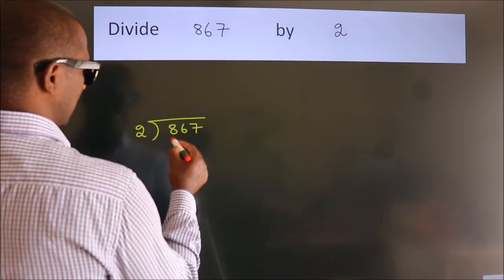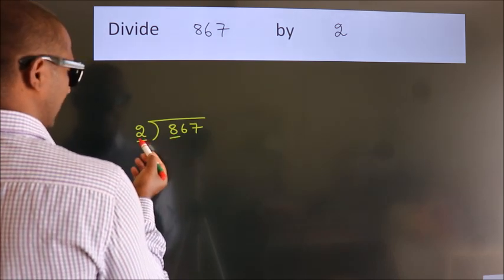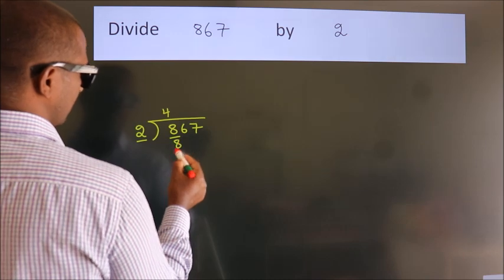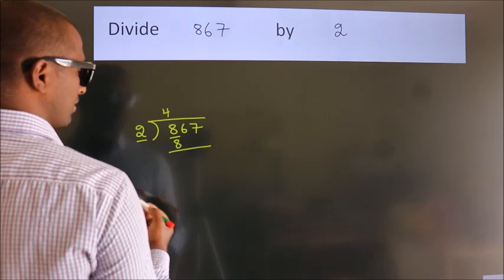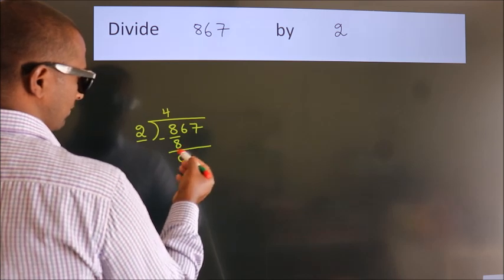Here we have 8, here 2. When do we get 8? In 2 table. 2 fours, 8. Now, we should subtract. We get 0.